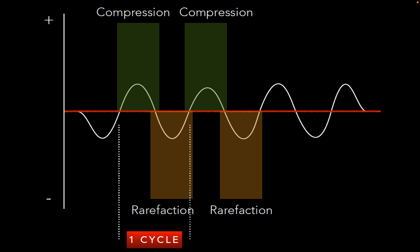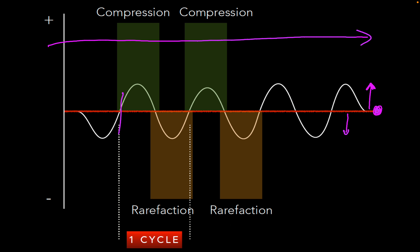We depict the sound wave as a sinusoidal sine wave traveling along the direction of propagation. Areas above the baseline represent positive pressure — your compression zones. Areas below the baseline are the rarefaction zones. A cycle is defined as any two identical parts of the wave — two peaks, two troughs, or any two identical points. That's one cycle.